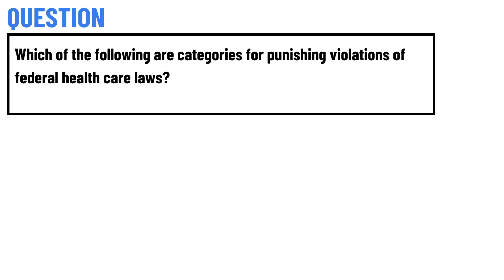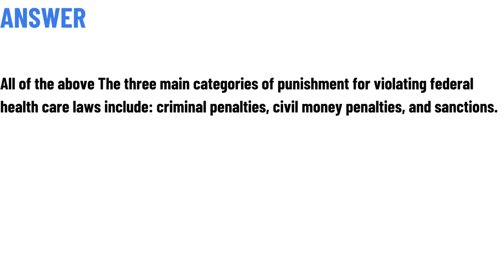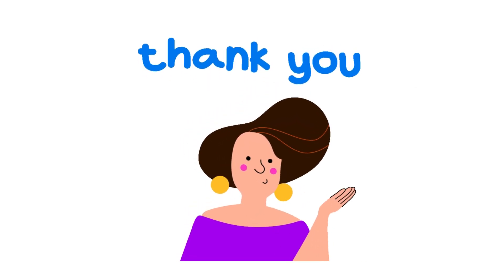Today's question is: which of the following are categories for punishing violations of federal health care laws? The correct answer is all of the above. The three main categories of punishment for violating federal health care laws include criminal penalties, civil money penalties, and sanctions.